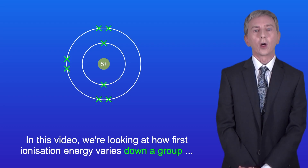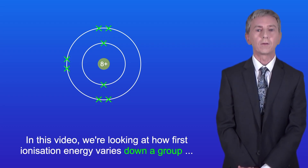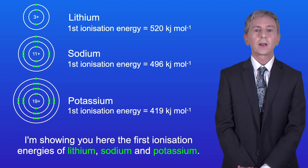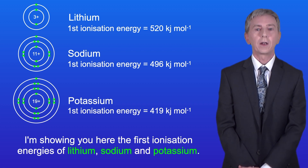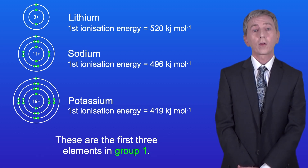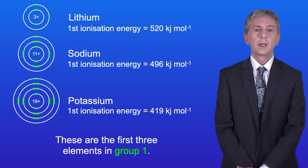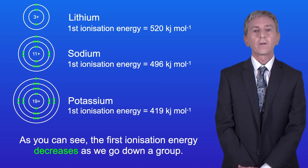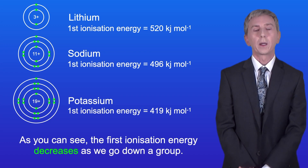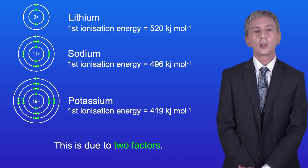In this video we're looking at how first ionization energy varies down a group. Shown here are the first ionization energies of lithium, sodium, and potassium — the first three elements in group one. As you can see, the first ionization energy decreases as we go down a group, and this is due to two factors.